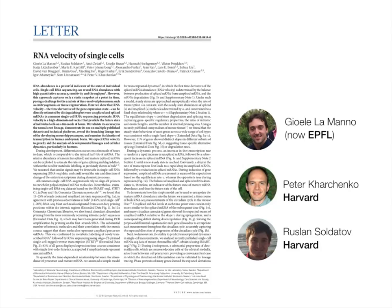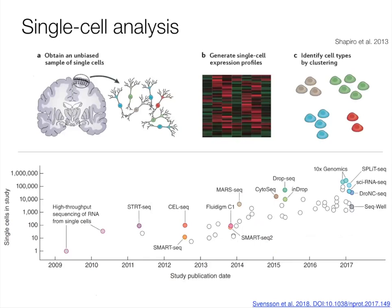I'm going to do a quick overview of RNA velocity and a little bit about the Velocito tool, starting by giving you a quick background on single cell analysis just to set the stage. Single cell analysis is a general approach to understanding complex tissues. When I started my group, I wanted to do single cell analysis, and I wanted to use a strategy shown here on the top.